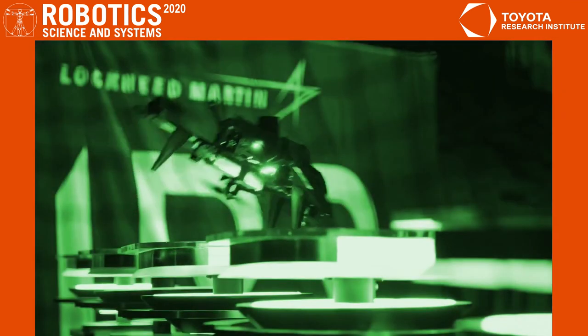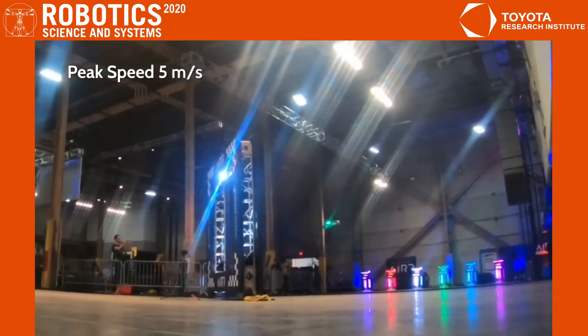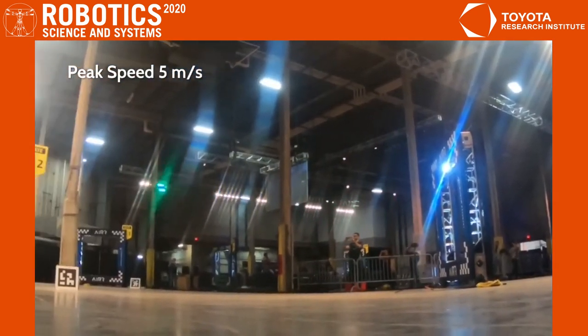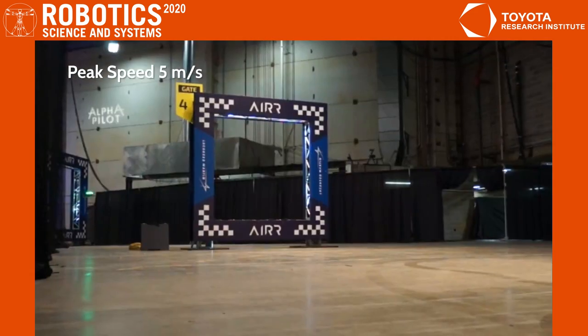In the following sequences, you see our approach in action. We fly the race course first at 5 m per second and then at 8 m per second multiple times successfully.